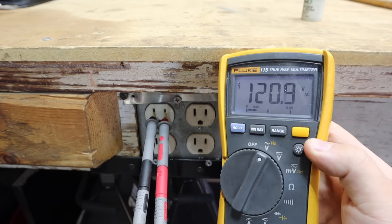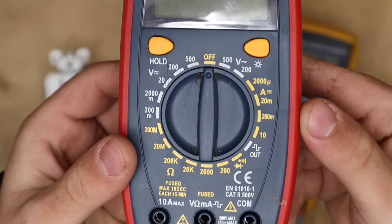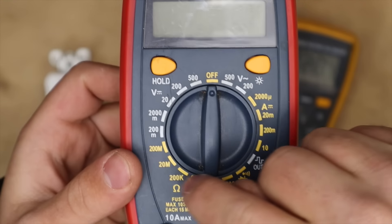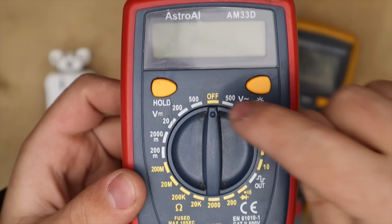This multimeter shows us the results automatically by ranging by itself. Later in the video we'll talk about manual ranging multimeters which have a bunch of numbers.